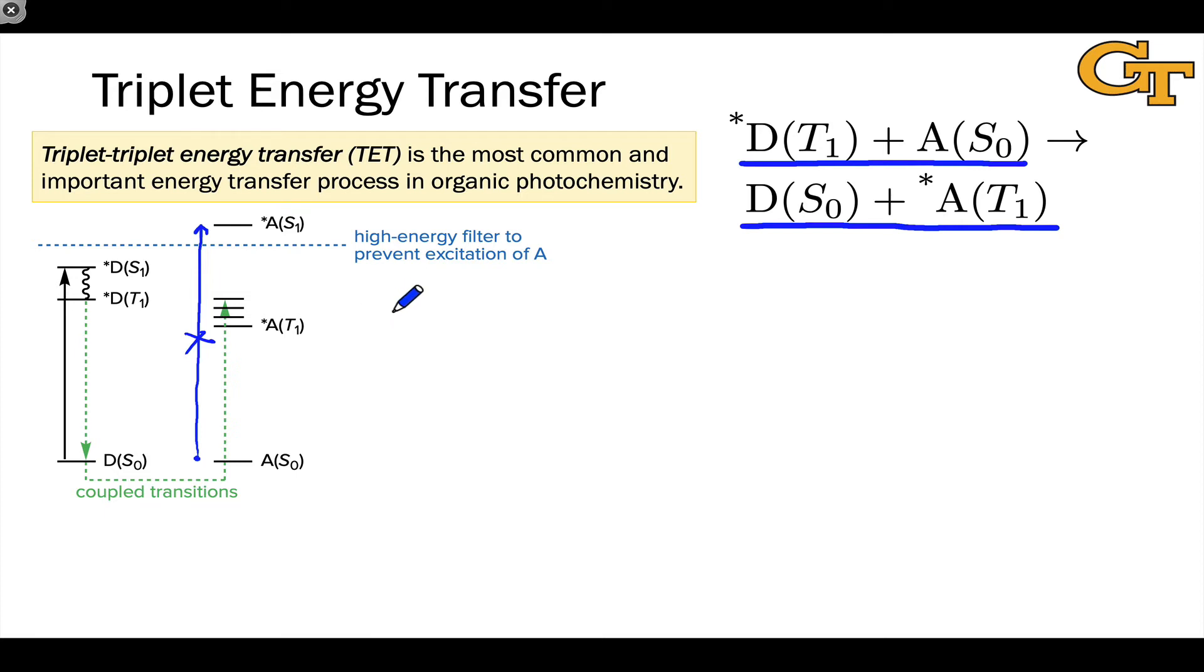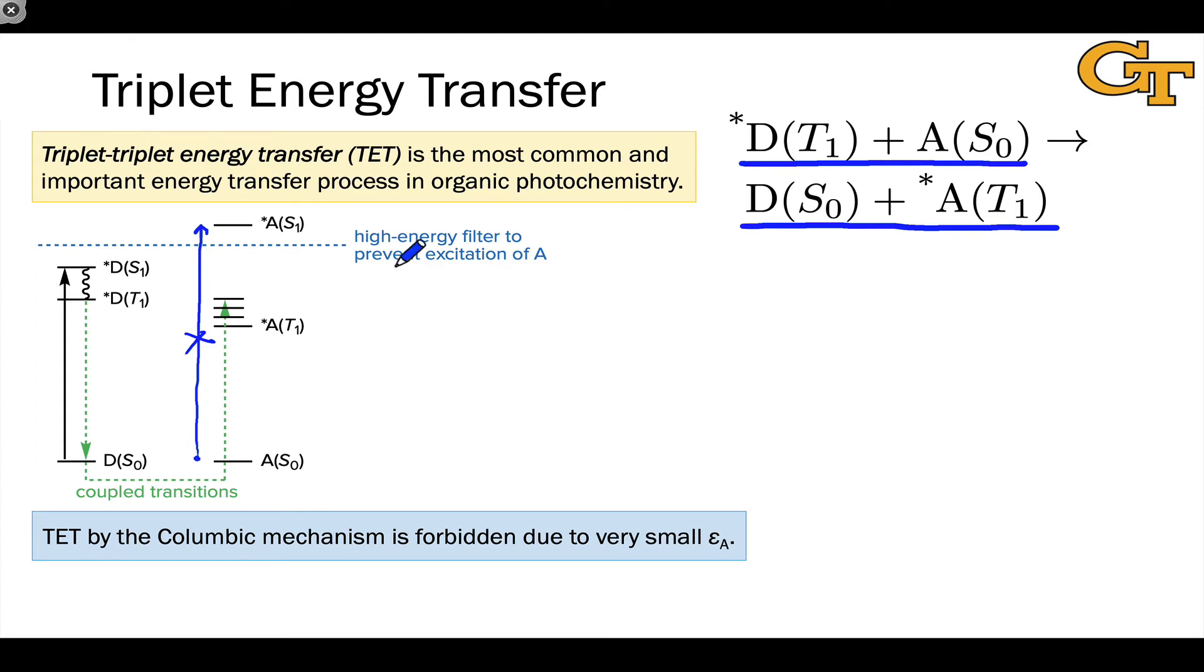Well, if we think about what Dexter and FRET depend on, what the rates of those energy transfer processes depend on, we'll realize that Coulombic energy transfer, or FRET, is going to be very, very slow for most triplet molecules. And this is because the absorption coefficient, the extinction coefficient associated with the S0 to T1 transition is typically very small.